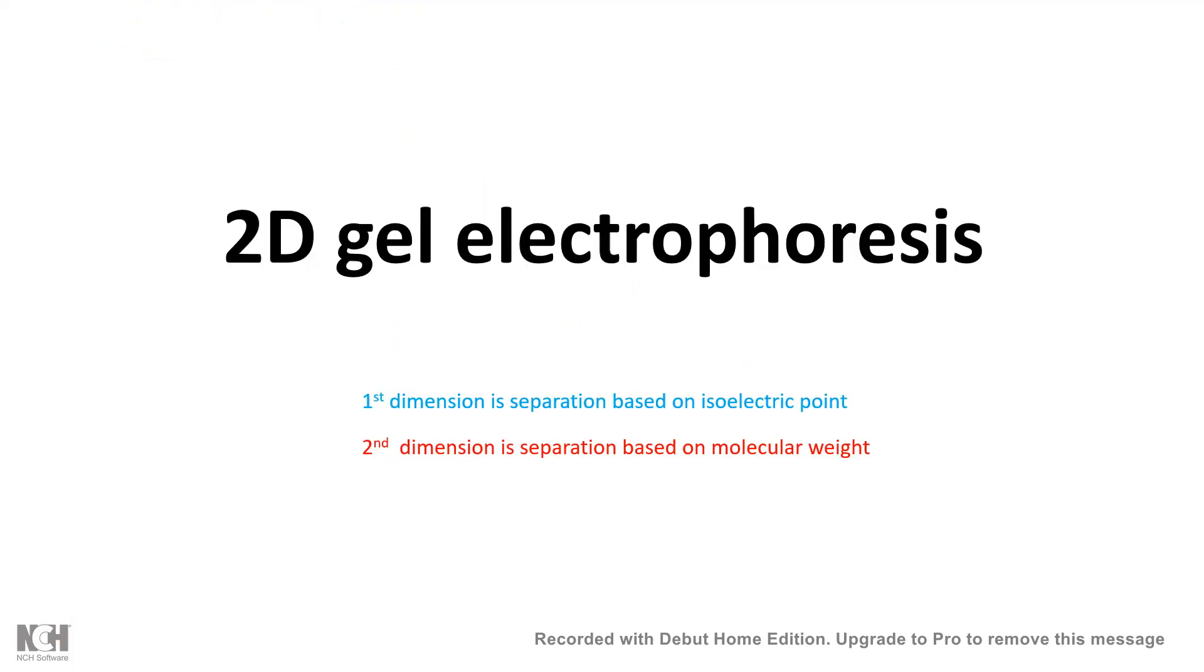That is why we can do 2D gel electrophoresis. The two dimensions of this 2D gel electrophoresis, which are basically two parameters, are isoelectric focusing (separation based on isoelectric point) and separation based on molecular weight, just like 1D gel electrophoresis. Let's try to understand the process step by step.